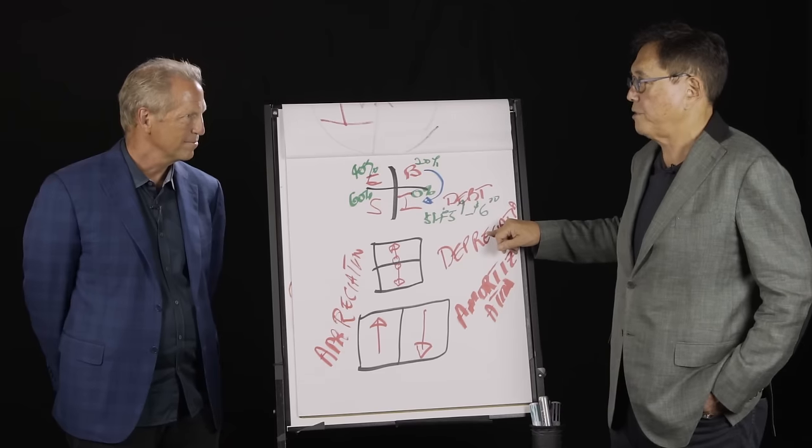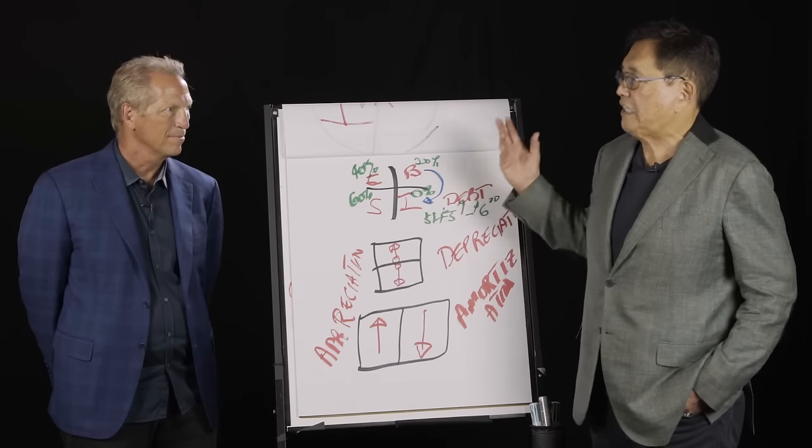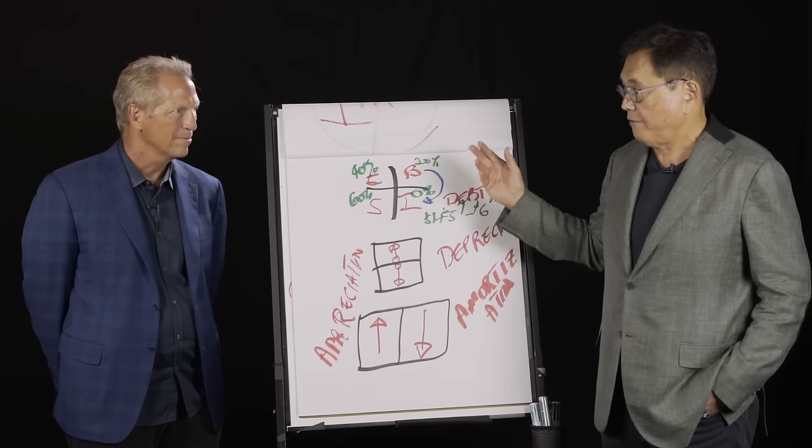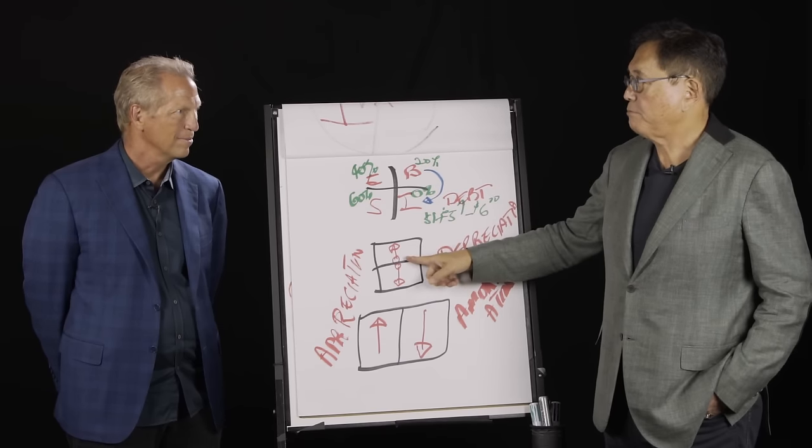But this here is the trick here. You see, depreciation means instead of paying $100,000 in taxes to the government, I keep the income. That's why it goes up.